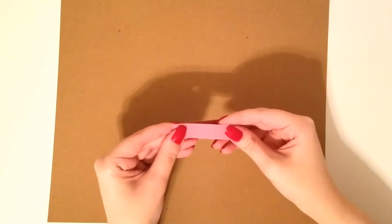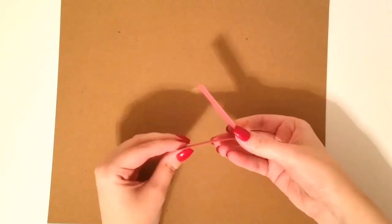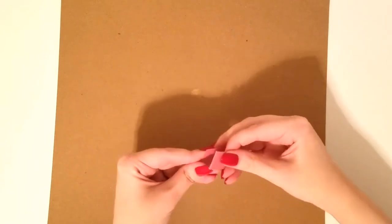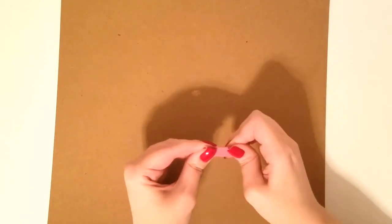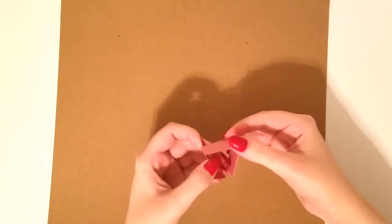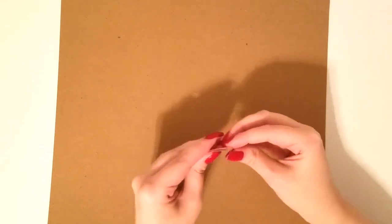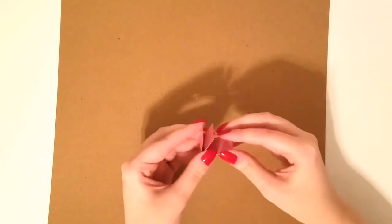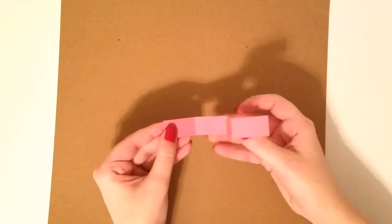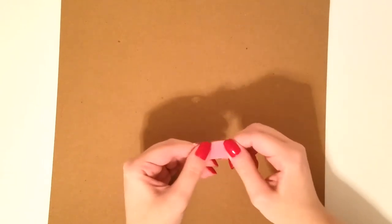So I'm just folding it in half, you can just kind of eyeball this, just the size of bow you want. And then I'm folding it in half again. So again, just to recap, I folded it in half and then folded it in half once more, and that'll give me my creases that I need for the bow.